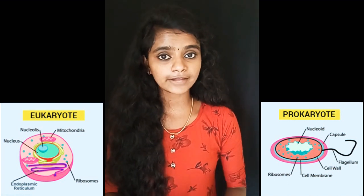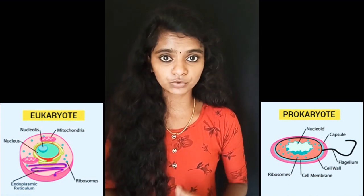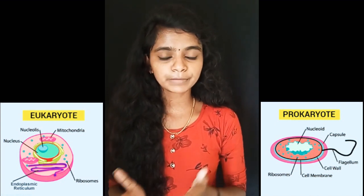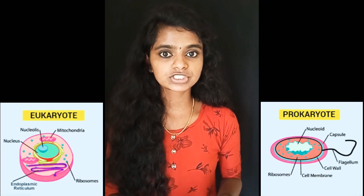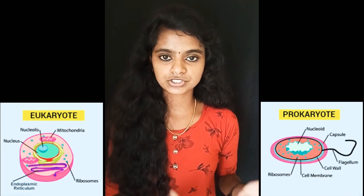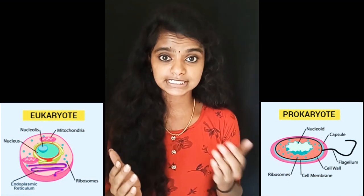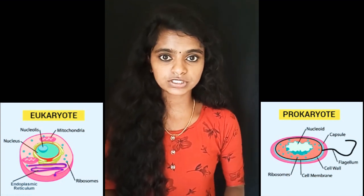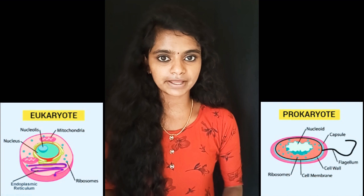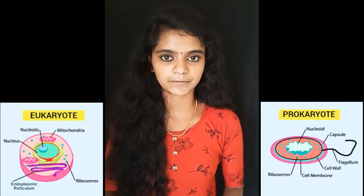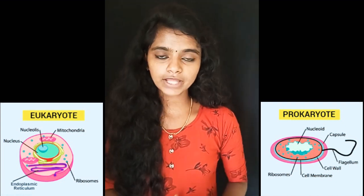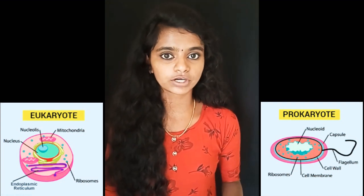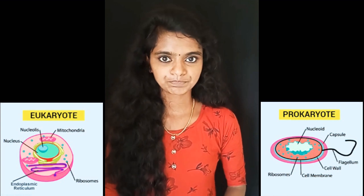For example, prokaryotes lack a nucleus and other membrane-bound structures known as organelles, such as endoplasmic reticulum, mitochondria, Golgi apparatus, etc. While eukaryotes have both a nucleus and membrane-bounded organelles.